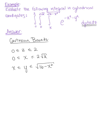When converting to cylindrical coordinates, we need our coordinates in terms of z, r, and theta. We'll keep the same z bounds, but we need to convert x and y. We'll use the x and y bounds to determine the corresponding r and theta bounds by sketching a graph.